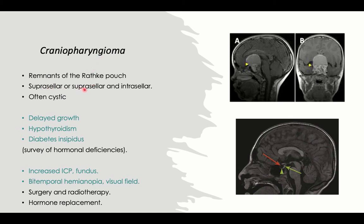Craniopharyngioma typically does not metastasize outside the CNS, but it presents with increased intracranial pressure — morning headaches, blurring of vision, projectile vomiting especially in the morning. The first organs affected by pressure are the pituitary gland, so it presents with endocrinological manifestations due to deficiency of pituitary hormones: delayed growth due to growth hormone deficiency, central hypothyroidism due to TSH deficiency, and diabetes insipidus due to antidiuretic hormone deficiency.